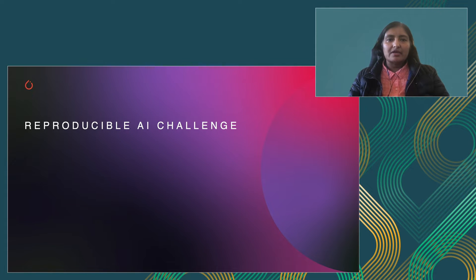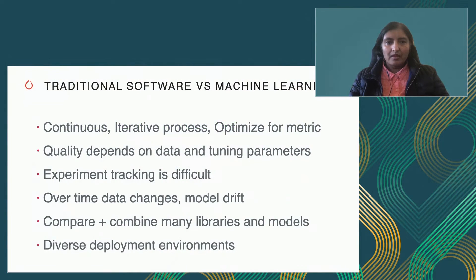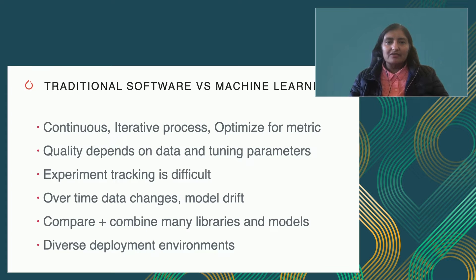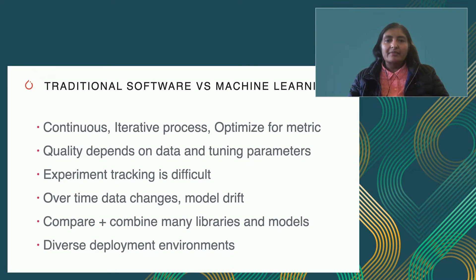Let's dive into some of the reproducible AI challenges. Unlike traditional software, machine learning has a very continuous and iterative process for building models. One is optimizing for a metric like accuracy. The quality of the data determines how good your models will be. You have to tune the parameters. Experiment tracking is very difficult — over time your data changes, which results in model drift and poor performance. One has to compare and combine many different libraries and models to get optimal performance, and due to diverse deployment environments, packaging and running models for inference is still a big challenge.